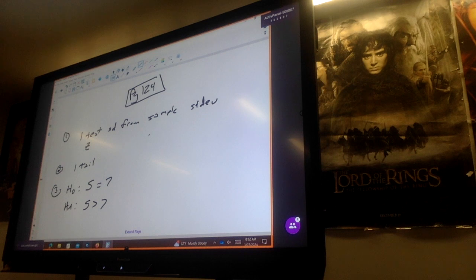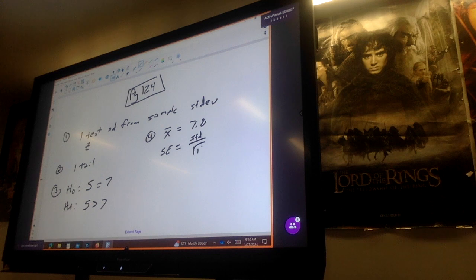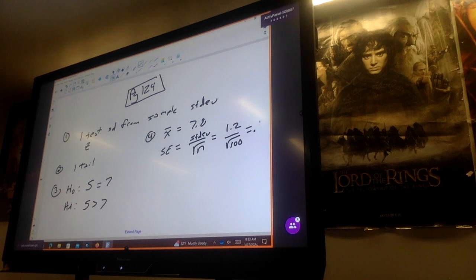Find the mean and the standard error. Okay, so mean is 7.8. Standard error, we're gonna take the standard deviation over the square root of the sample. Our standard deviation is 1.2 over 10. This is gonna give me a 0.12.